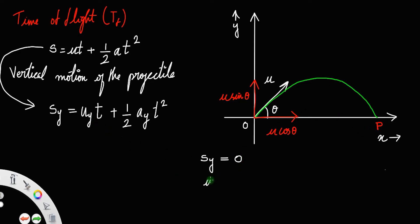Now u_y is equal to—u_y will be the vertical component of velocity, this one, u sin theta, the vertical component of initial velocity.